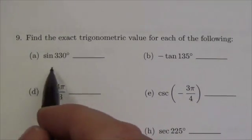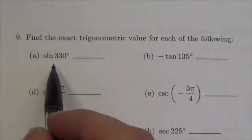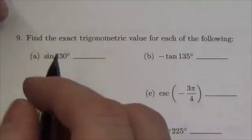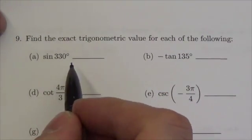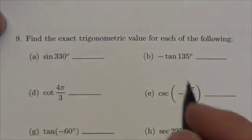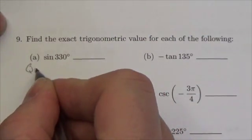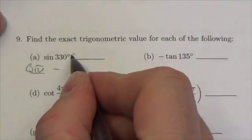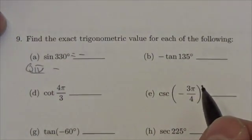This question is asking us to find the exact value for sine of 330 degrees. The way I would do this is first take a look at 330 degrees and figure out what quadrant it's in. This is going to be in quadrant 4, which means sine is going to be negative, so I know this will be a negative value.